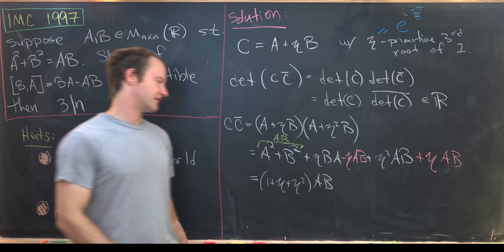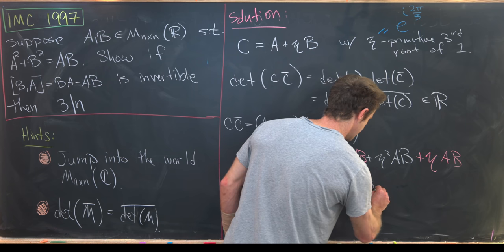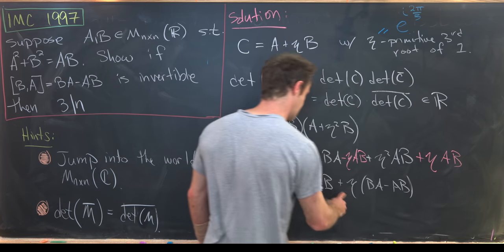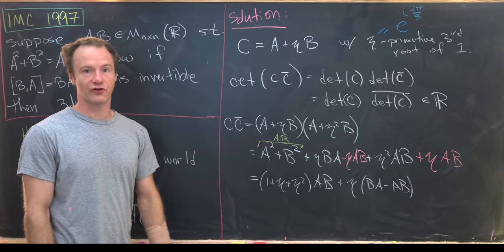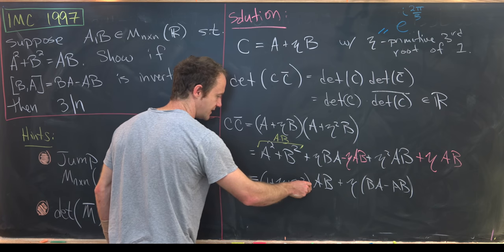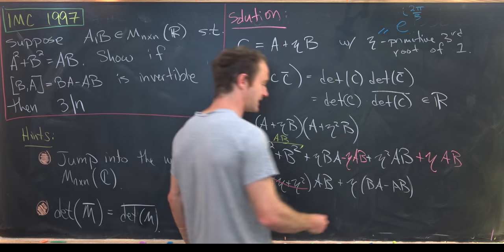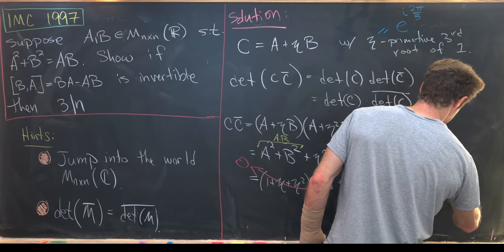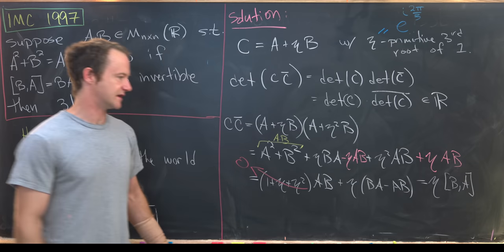And then let's see what we have left over. We have eta times BA minus AB. In other words, we have eta times that commutator. Because eta is a third root of unity, that means it's a root of this polynomial, which means this thing cancels down to zero. But that leaves us with this is equal to eta times, like I said, the commutator of B with A, which I'll just denote like this.